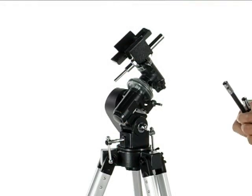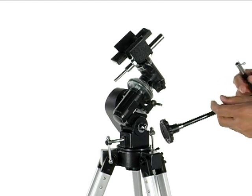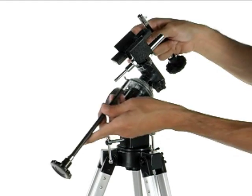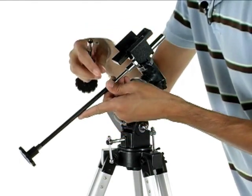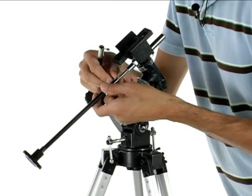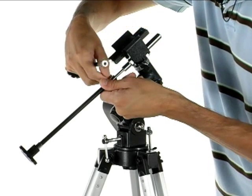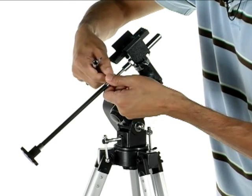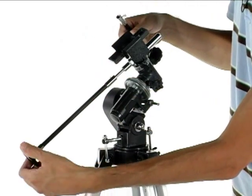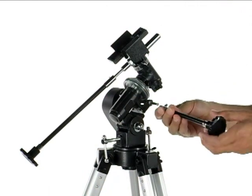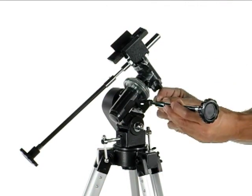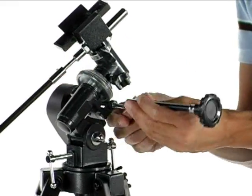Next step will be connecting the cables to the equatorial mount. The long one will actually connect up towards the top right here. Once you get it in there is a thread and a little niche on here that will lock it in place. And then the smaller one will go right here on the lower right next to where the drive motor was at.